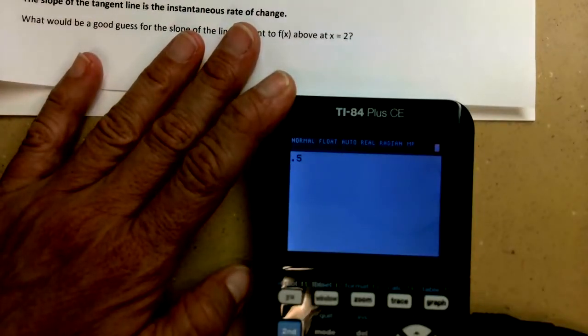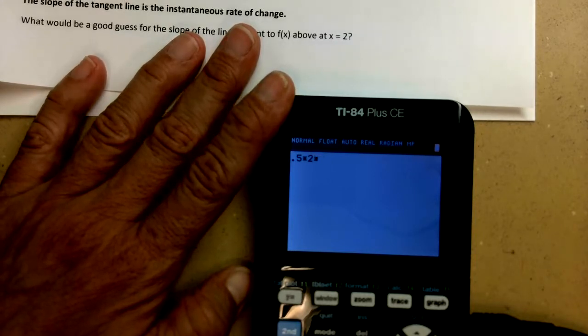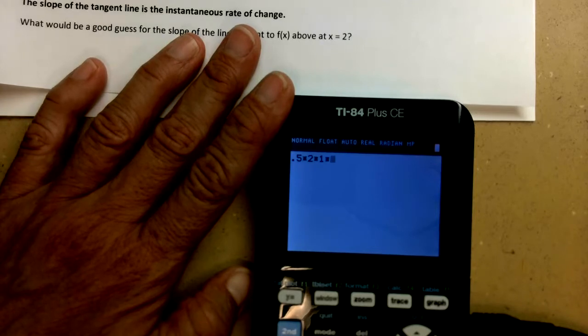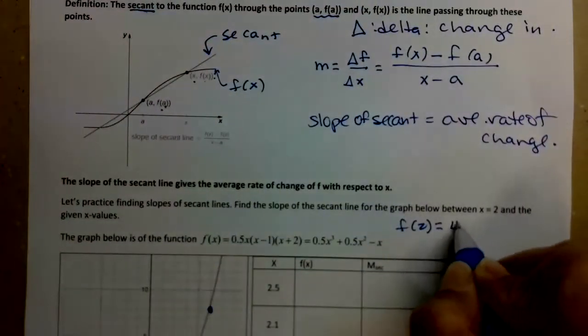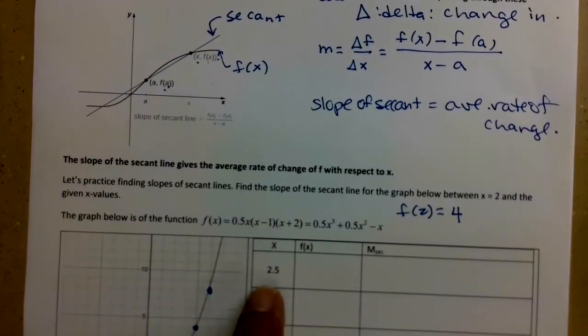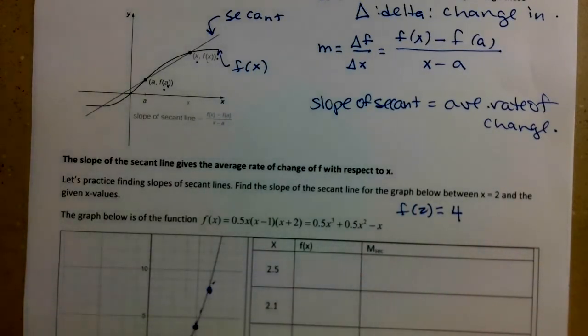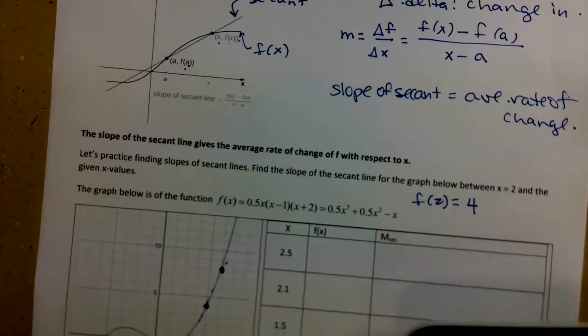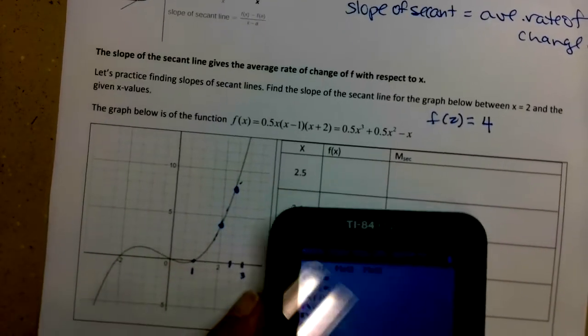I've got to move my paper so you can see my screen. So I've got 0.5 times 2 times, let's see, I'm going to do some math in my head. 2 minus 1 is 1, times 2 plus 2 is 4. That looks like 4, which is what my graph said as well. So f of 2 is 4, and now we're going to find f of 2.5.